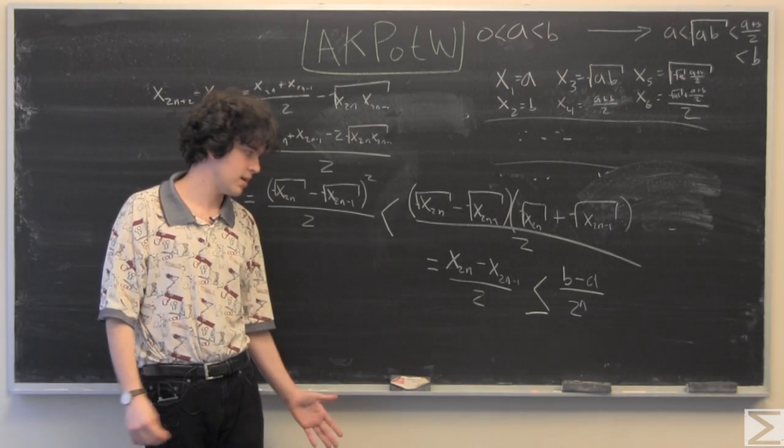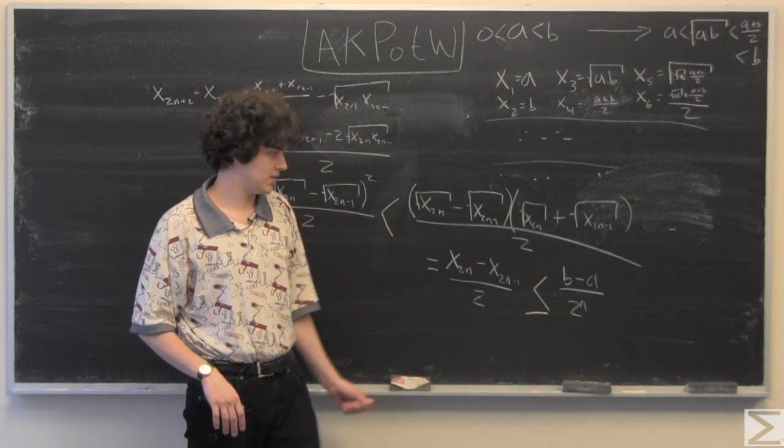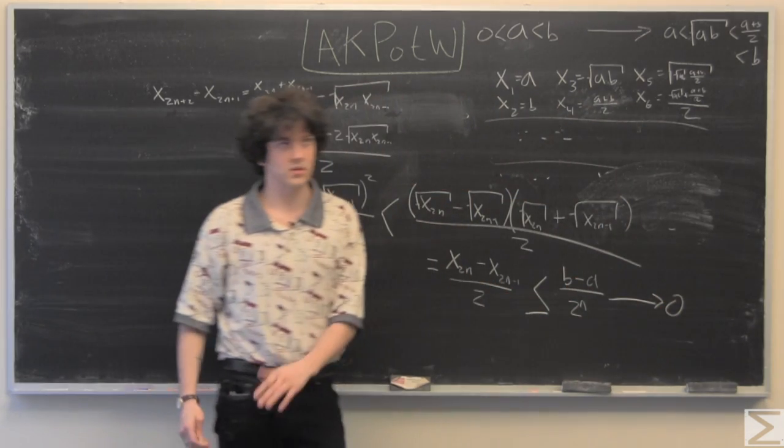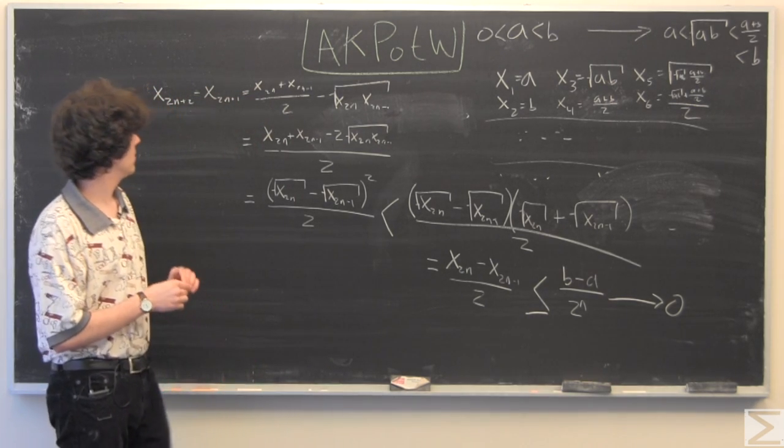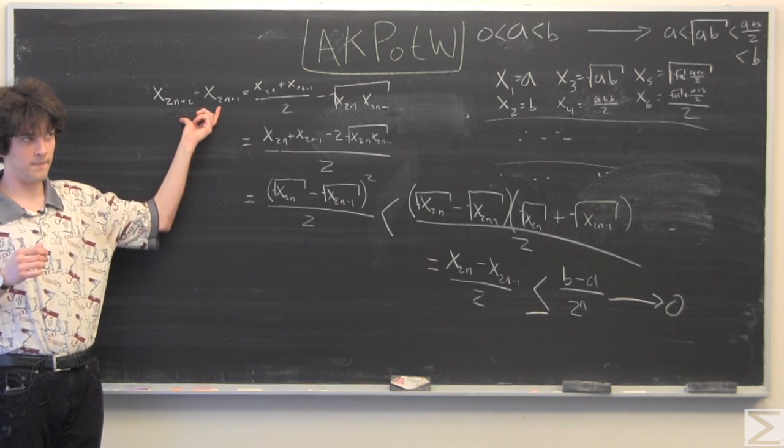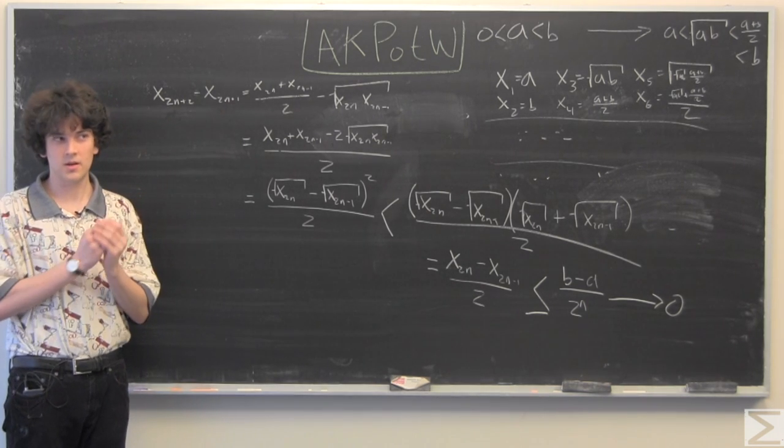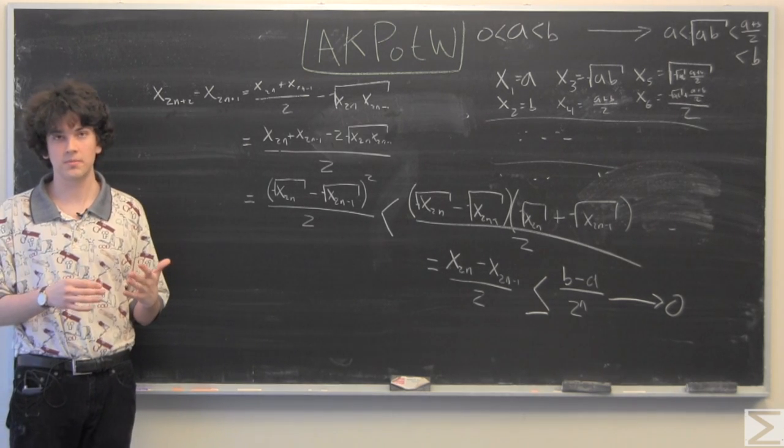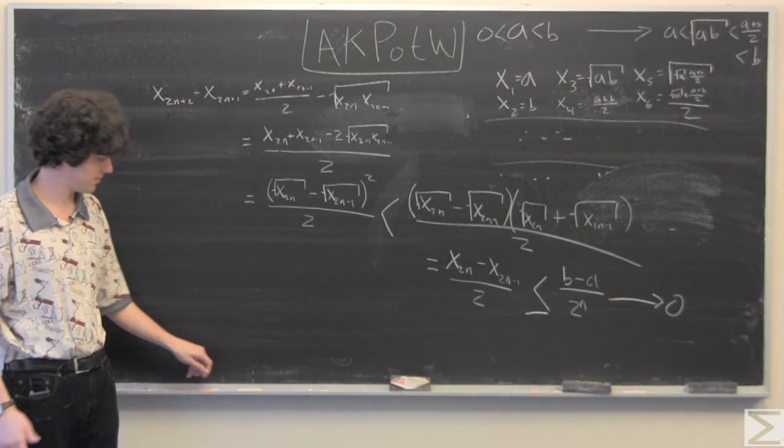So we're going to take b minus a over 2 to the n. And just by looking at this, as n approaches infinity, the length is going to go to 0. And since the length is going to 0, but these two terms never equal each other, it's kind of like a paradox in a way that the length is going to 0, but the interval will contain a single point as n approaches infinity. And that is the proof that the sequence that we're given converges.